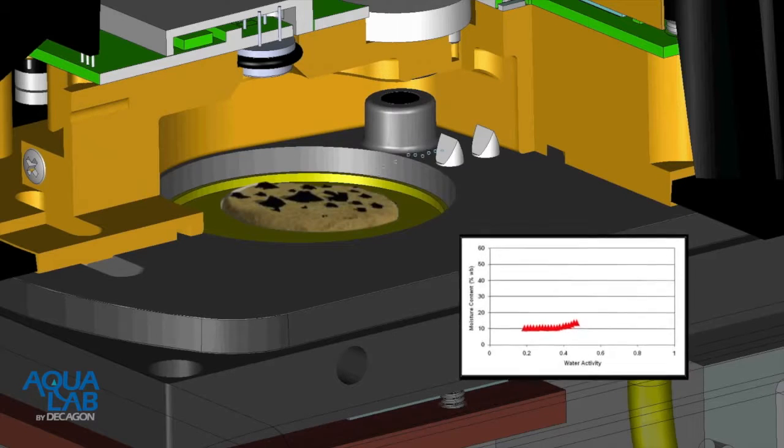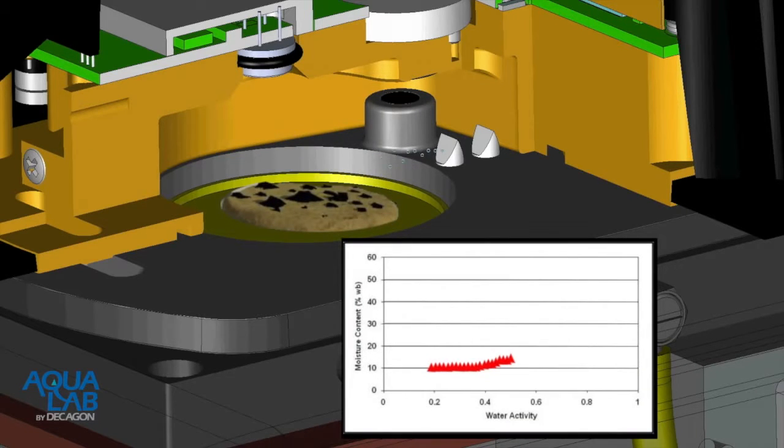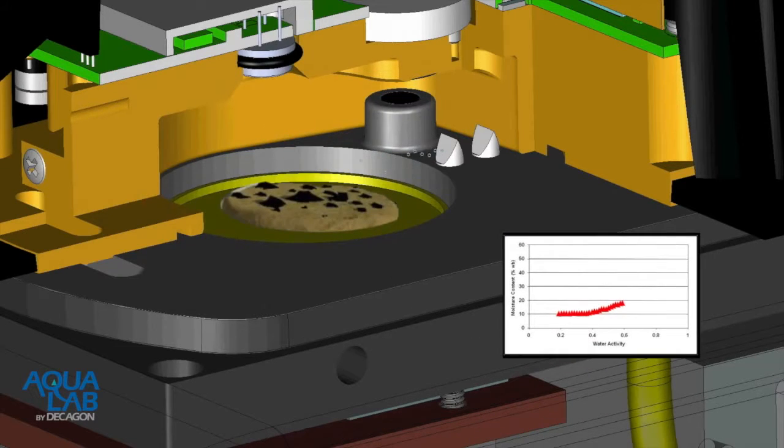Due to the high level of resolution, DDI isotherms can be used to compare hygroscopicity of samples, visualize glass transitions in low molecular weight glassy materials, and determine critical humidities for stability.